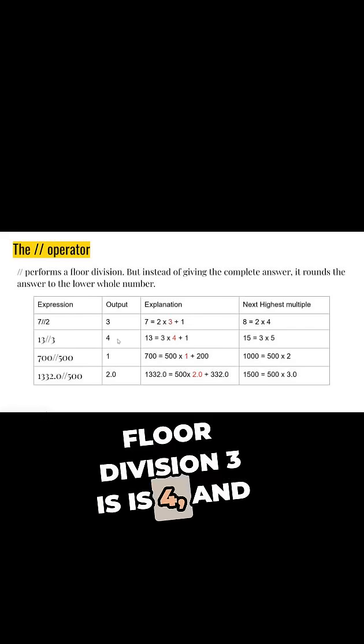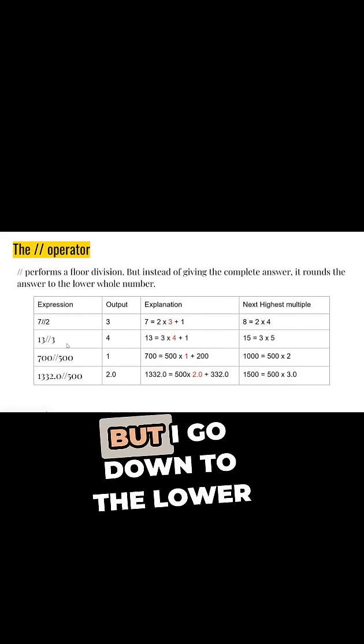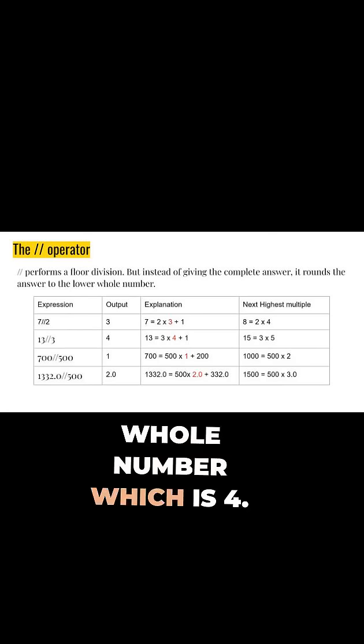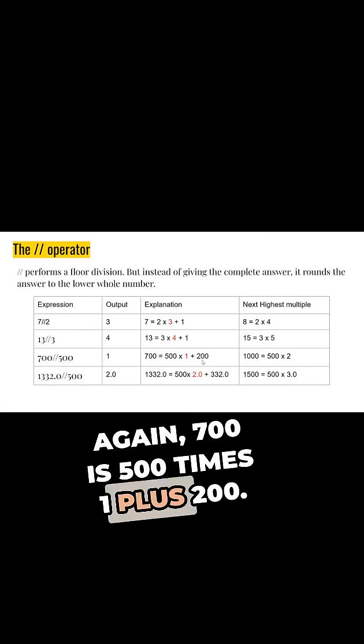That's because 13 divided by 3 is actually 4.333, but I go down to the lower whole number, which is 4. 700 floor division 500 is 1, because 700 is 500 times 1 plus 200.